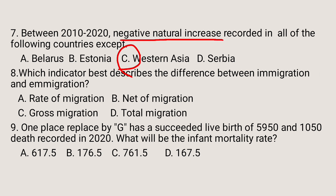Question number 8. Which indicator best describes the difference between immigration and emigration? A. Rate of migration. B. Net migration. C. Gross migration. D. Total migration.